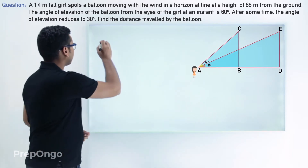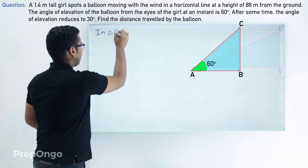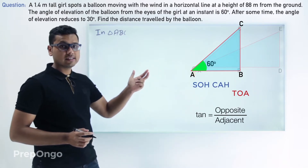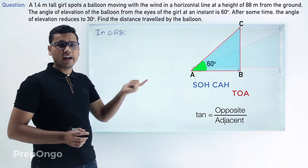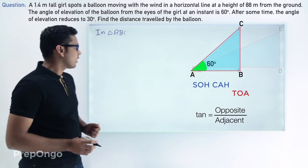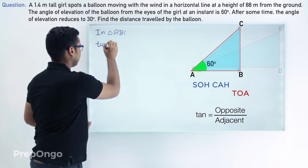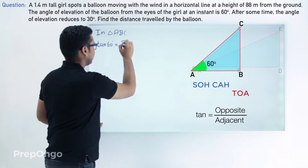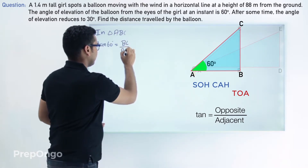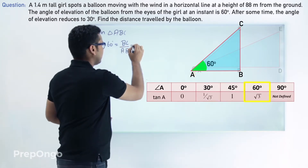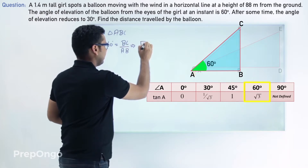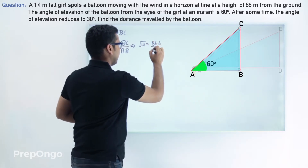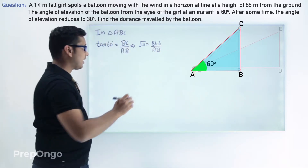In the first triangle ABC we apply trigonometric ratios to get the value of AB. We apply TOA since we have the opposite side and need to find the adjacent. Tan of 60 degrees equals opposite over adjacent, so tan(60°) = BC/AB. Substituting, root 3 equals 86.6 divided by AB. Cross multiplying, AB equals 86.6 upon root 3 meters.